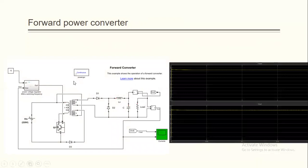Here is the Simulink forward power converter model. As we said, here is the primary and secondary. The third is to manipulate the output voltage.